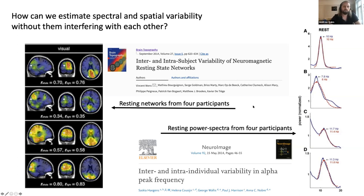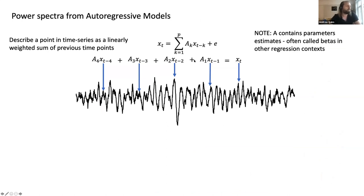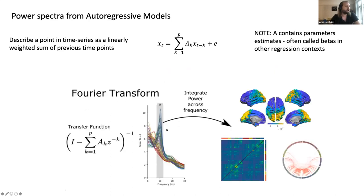I'm going to present a method based on autoregressive models, which allows us to characterize both the spatial structure and the spectral structure of a set of brain networks. An autoregressive model has some potentially scary-looking math, but the concept is very straightforward: we model what's happening at a particular time point as a linear combination of previous time points in that same time series. These A parameters are regression coefficients relating the past history of a time series to what's going to happen in its future. Once we have these A parameters, we can get a power spectrum by doing a Fourier transform to get a transfer function, and then by scaling the transfer function we get a power spectrum.